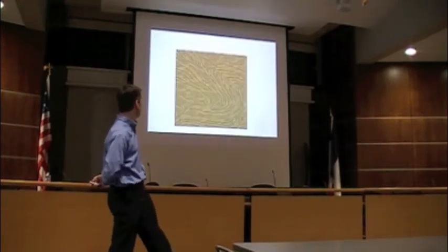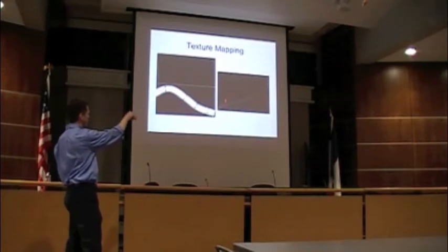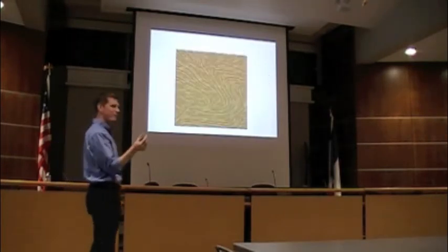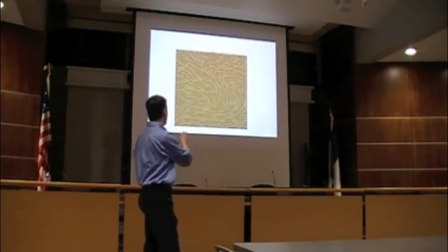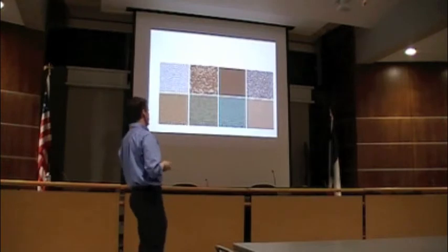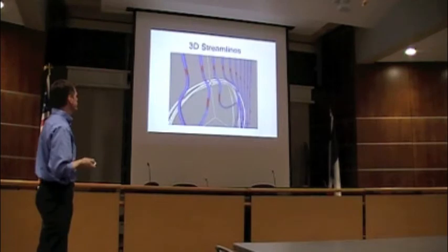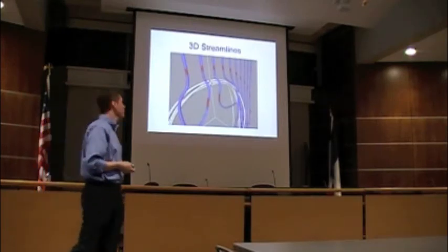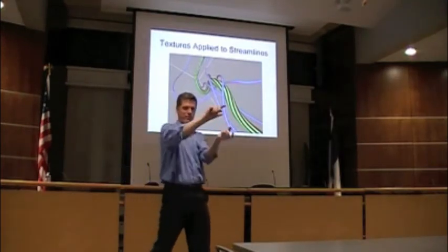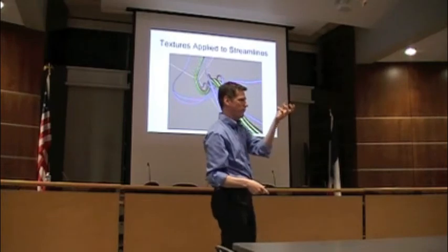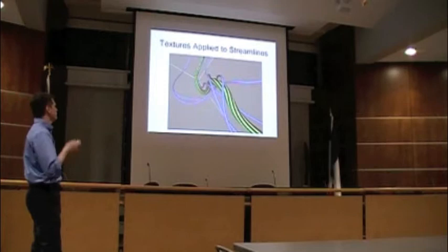We also created wider streamlines and applied different textures or pictures on top of them to visualize flow using multiple visual approaches. Then we extended this to three-dimensional streamlines, applying textures and twisting them to represent how much the vector field itself is twisting in the data.